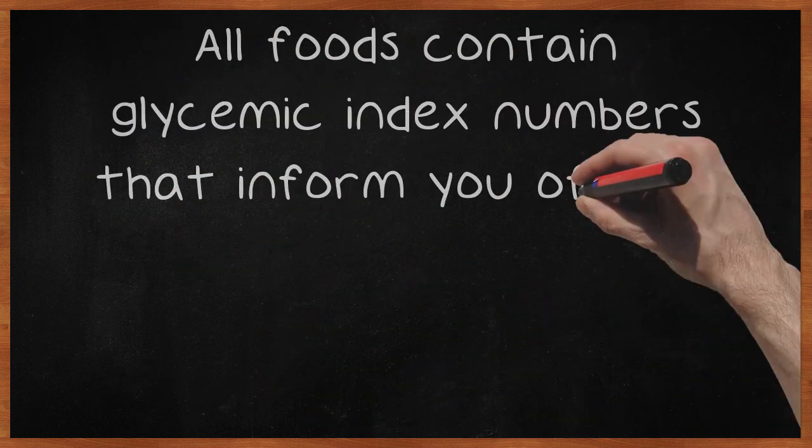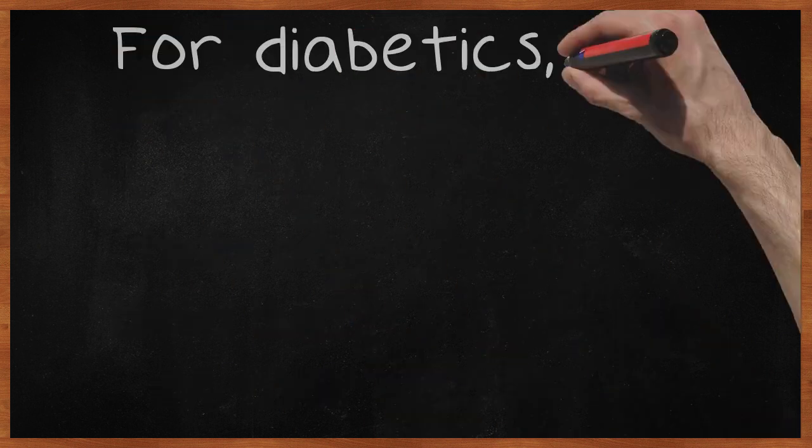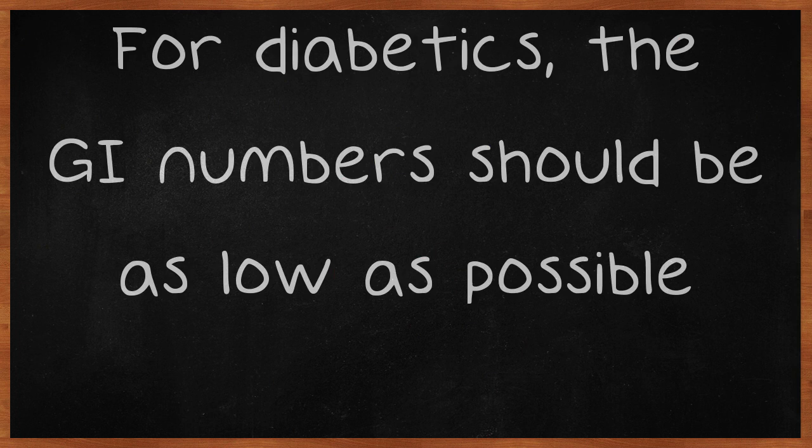All foods contain glycemic index numbers that inform you of how they will impact your blood sugar levels based on their ingredients. For diabetics, the GI numbers should be as low as possible.